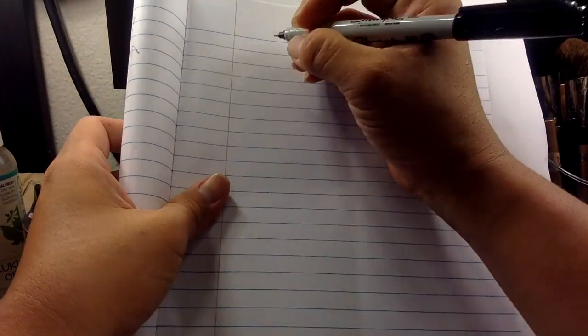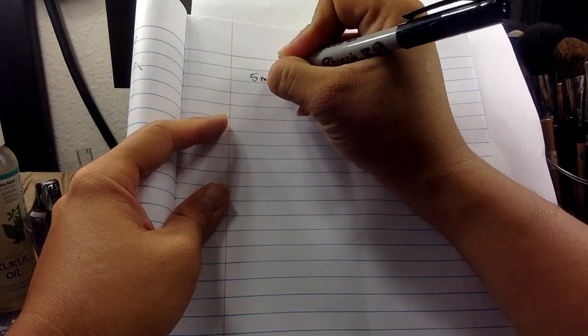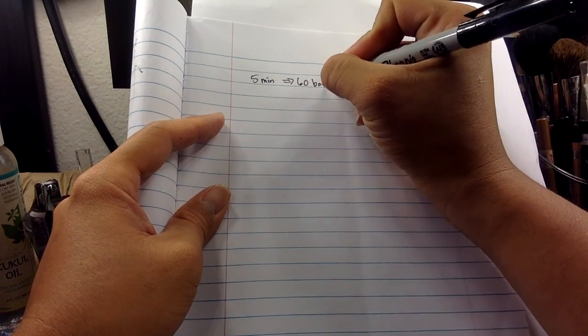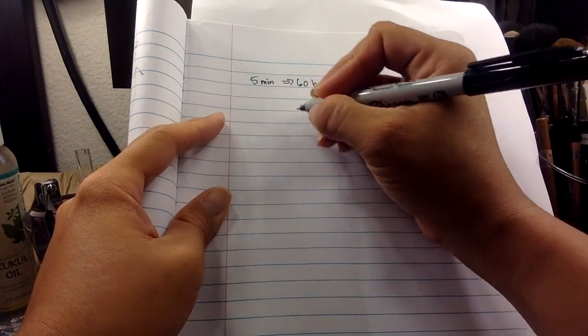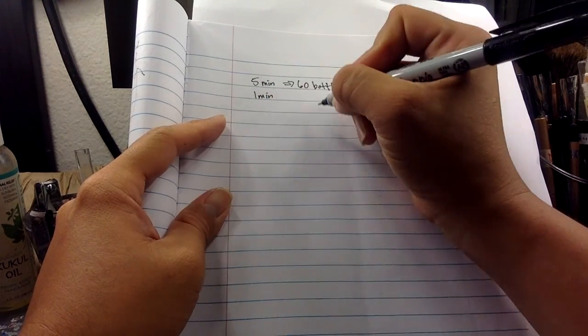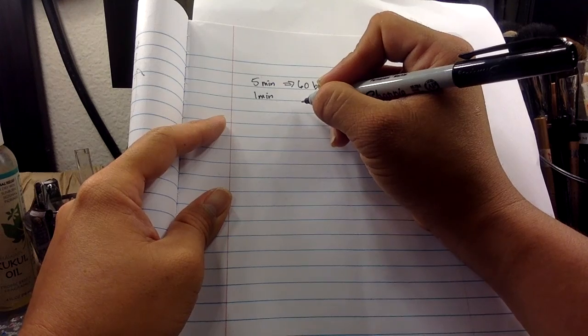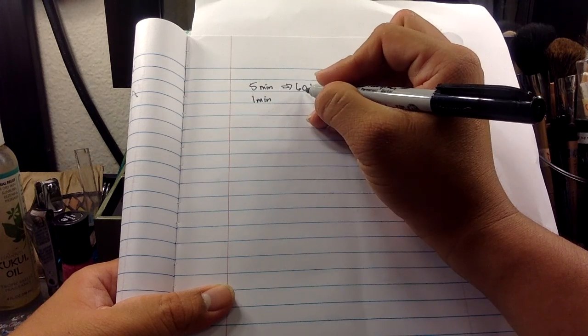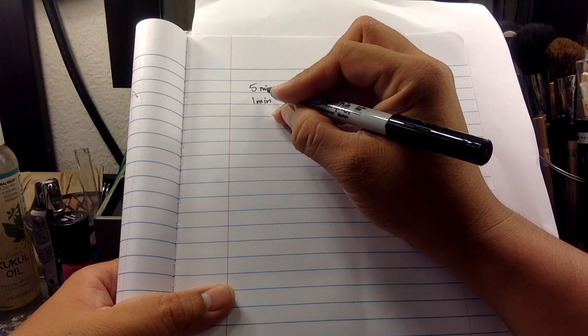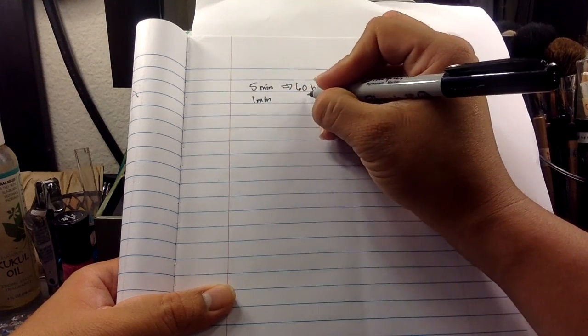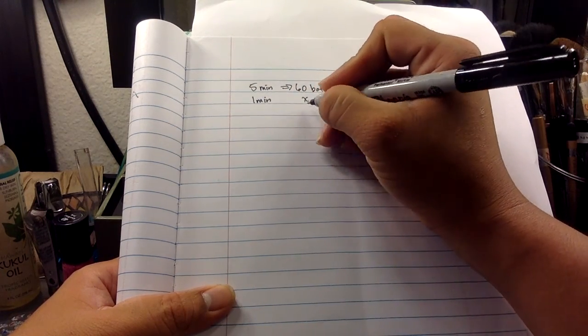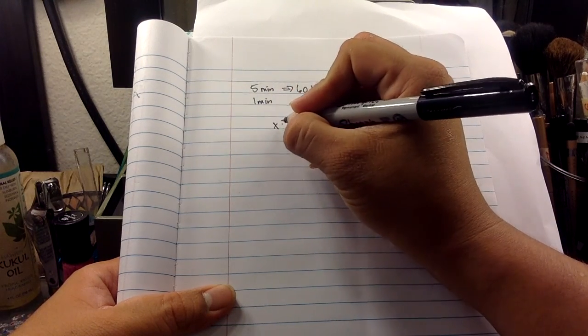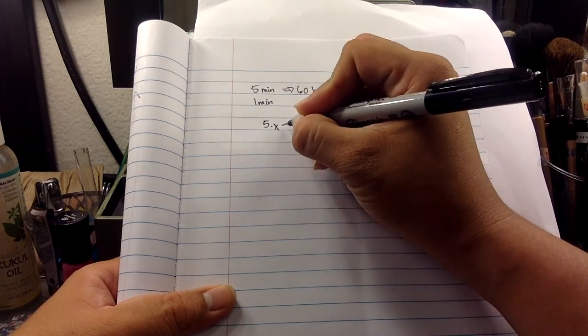If it takes five minutes to fill 60 bottles, then in one minute, how many bottles does it fill? Obviously, it's less than 60. In fact, I would need to multiply whatever the number is, maybe x, by five to get 60. So x times five, or yeah, we'll go five times x is equal to 60.